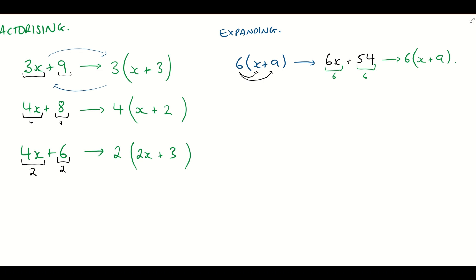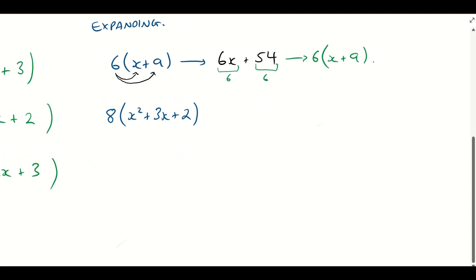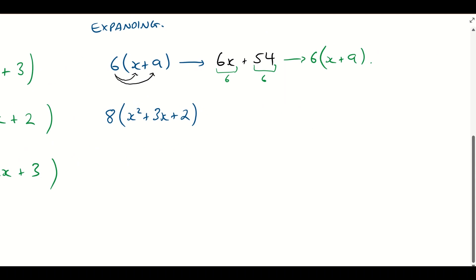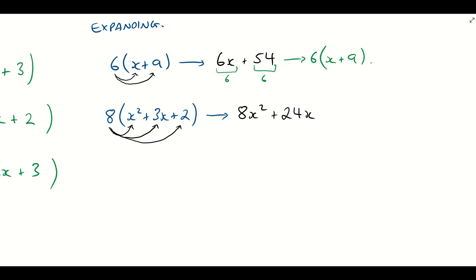Let's do another problem. Let's take a look at 8 outside of (x² + 3x + 2). We've got a few more terms inside the brackets. The same principle applies — we expand our 8 into x² first, so that becomes 8x². We then expand 8 into 3x, giving us 24x. And then we expand 8 into 2, so 8 times 2 is 16. Each one of these arrows is a multiplication. Our final answer is 8x² + 24x + 16.